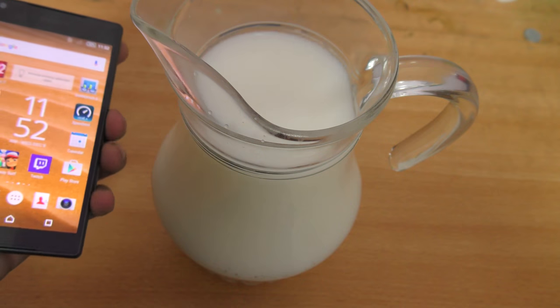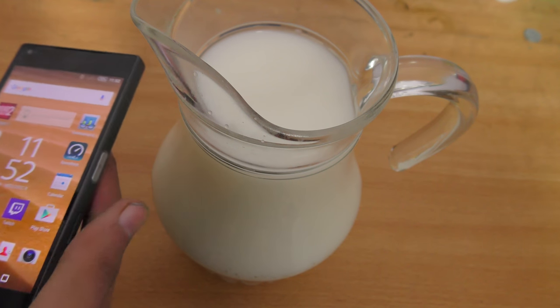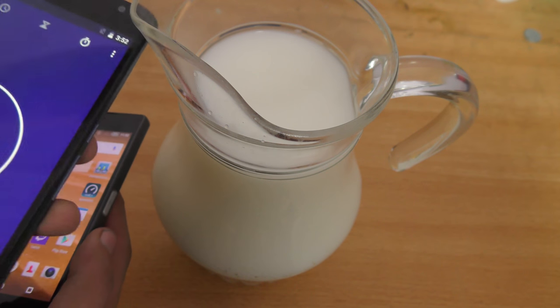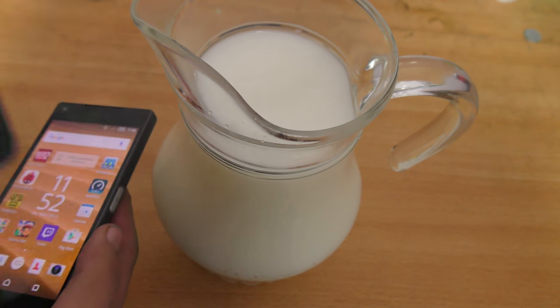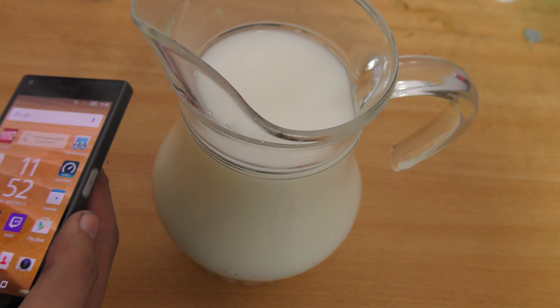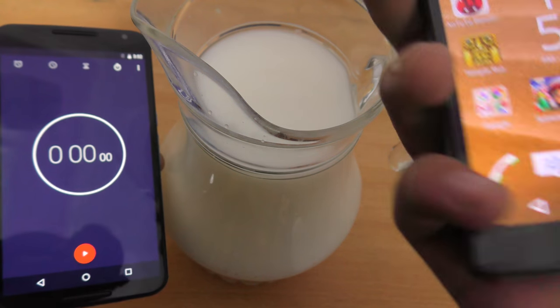What I'm gonna do is put this in the jug for three minutes. I have this timer on my Nexus 6, so we're just gonna reset the timer. Okay, let's see here.